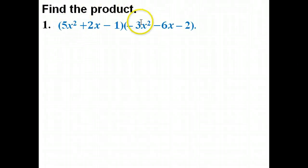be distributing this 5x squared to the negative 3x squared, to the negative 6x, and to the negative 2. The same thing with the 2x to all three terms, and then the negative 1 to each one of those three. And it can get kind of confusing when you're trying to write it all out. There's another method that's called the box method, and that's what we're going to go through today.